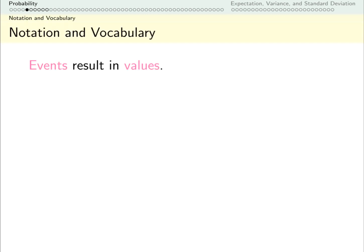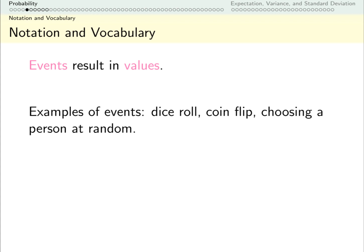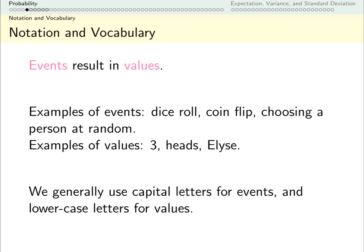We're going to use some very specific notation. Events are things that result in values. An event is something that happens that gives you your random value. So for example, rolling a dice is an event. 3 is a value arising from that event. Flipping a coin is an event. Heads is a value arising from that event. Just to keep things straight, usually not always, we like to use capital letters for events and lowercase letters for values.